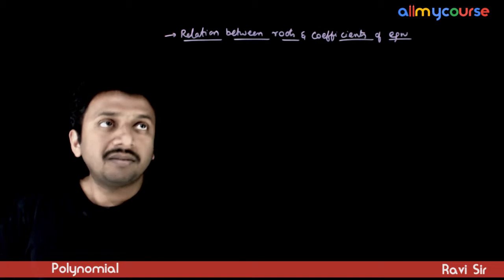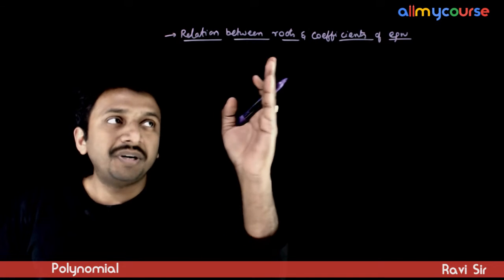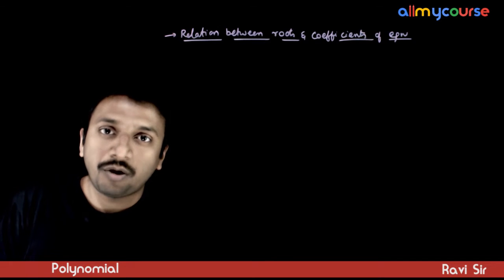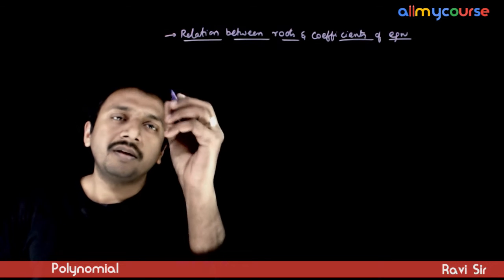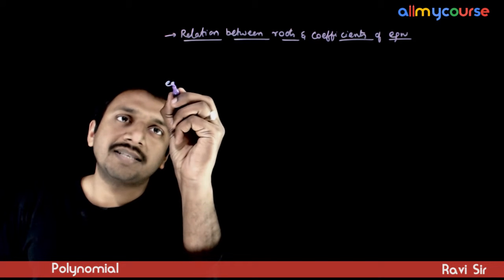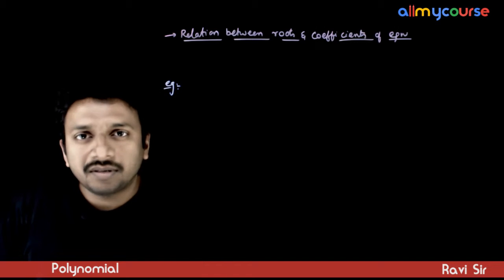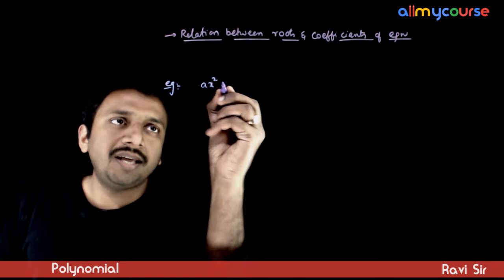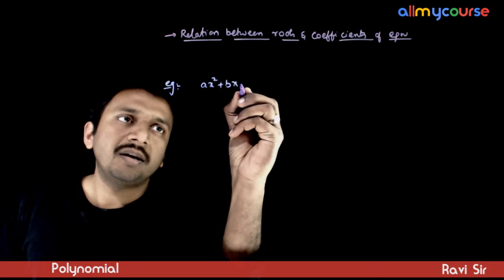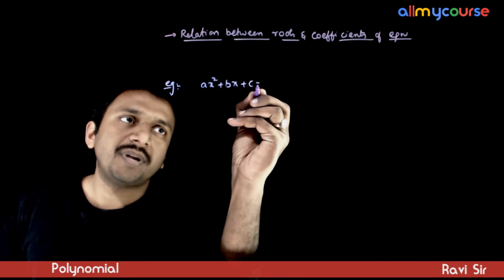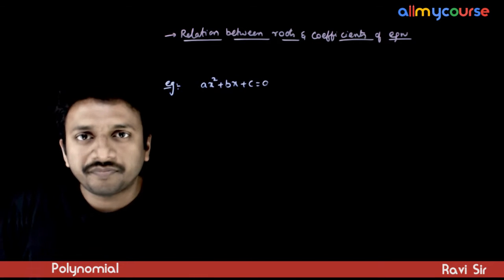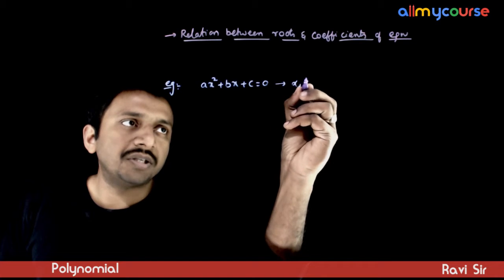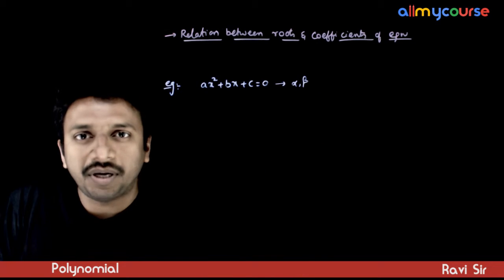In this video, let us look at the relation between the roots and coefficients of a polynomial equation. Let us take an example. Let us say that you have a quadratic equation ax squared plus bx plus c is equal to zero, and let the roots of this equation be alpha and beta.